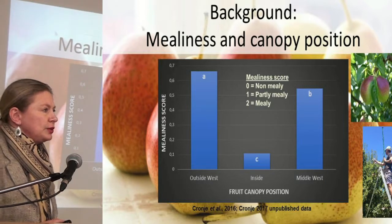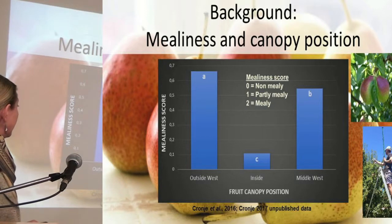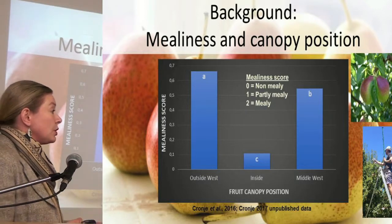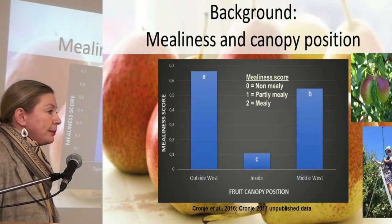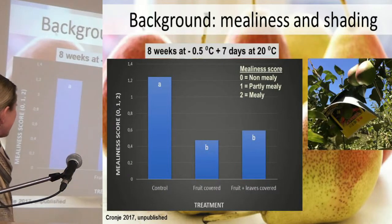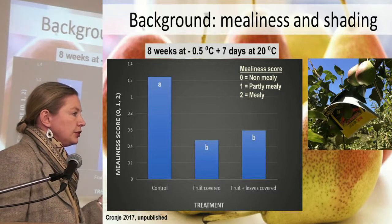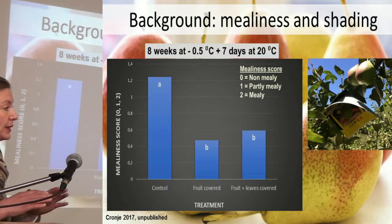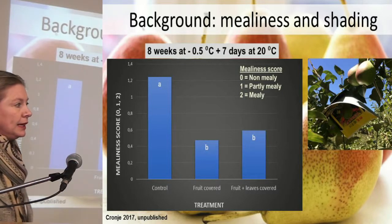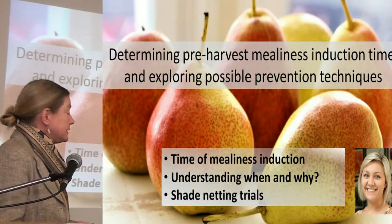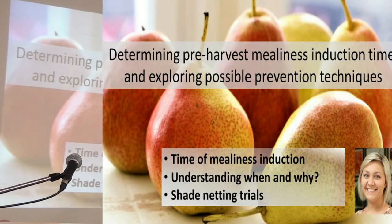Just a background to the study — why are we doing what we're doing? A previous study by Rudolph, and also another study, showed that canopy position actually plays a role. So it's not only the storage period — this actually starts already in the canopy. Inside fruit, once they ripen, are a lot less mealy than outside canopy fruit, whether on the west or middle-west side. We then asked: can we make outside fruit non-mealy? Is it a canopy position effect or a temperature or radiance effect? We put caps over the fruit and found a lot less mealiness in the covered fruit — those under shade from December onwards to harvest.